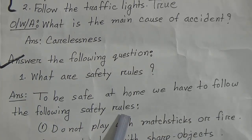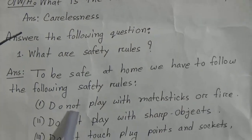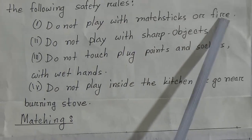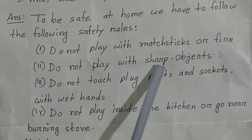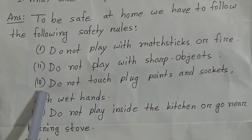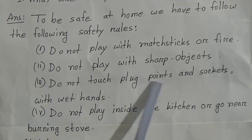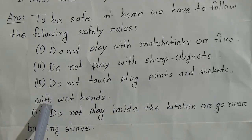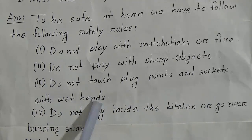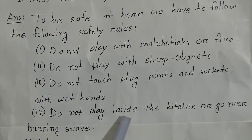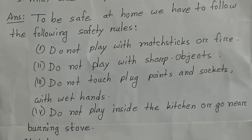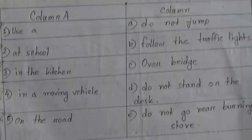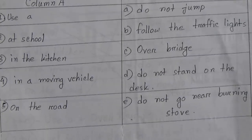Answer the following question: what are safety rules? The answer is — to be safe at home we have to follow the following safety rules: number one, do not play with matchsticks or fire; number two, do not play with sharp objects; number three, do not touch plug points and sockets with wet hands; number four, do not play inside the kitchen or go near a burning stove.